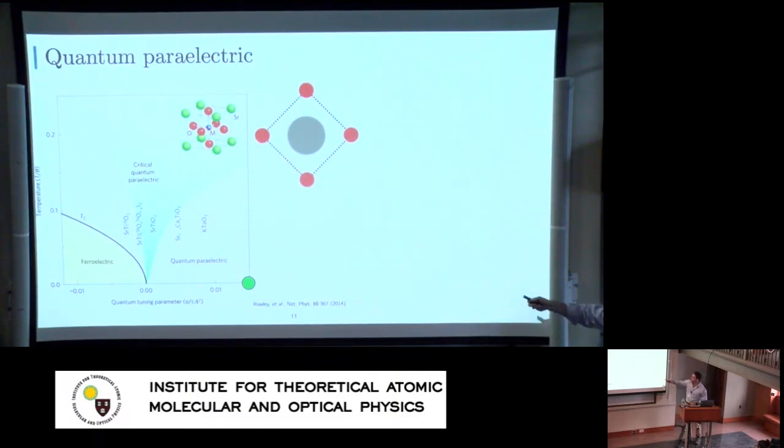You can think that you have a certain phonon mode associated to the vibrations of the titanium in the center of this octahedral oxygen cage, and it undergoes quantum vibrations or thermal vibrations, and these are very fast. But as you approach the critical point, they undergo this critical slowing down, and the phonon frequency goes to zero.